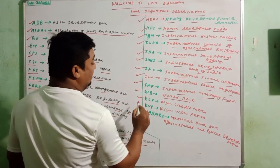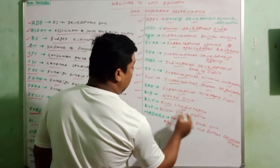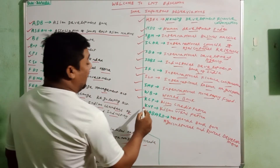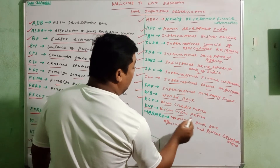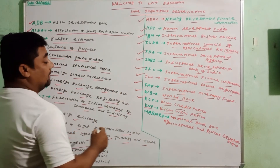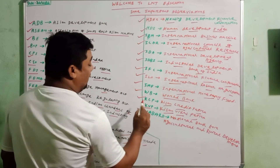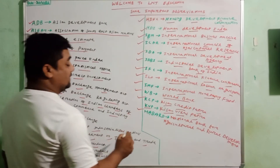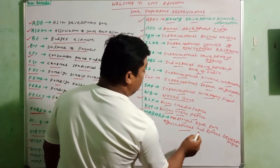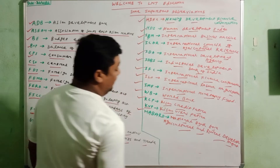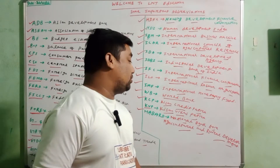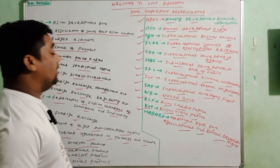KCP means Kisan Credit Patra. KVP means Kisan Vikas Patra. NABARD means National Bank for Agricultural and Rural Development.